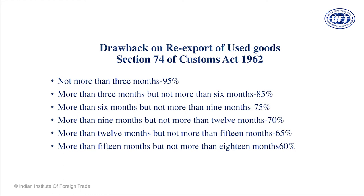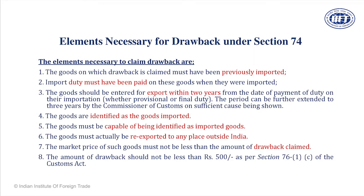This is all about Section 74. Certain preconditions: goods must be previously imported — proof is bill of entry; duty must have been paid — proof is TR6 chalan if paid manually, or GAR7 form if paid online. GAR7 is the form mandated for payment of duty in India. Goods must be exported within 2 years, preferably within 18 months.